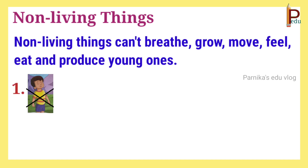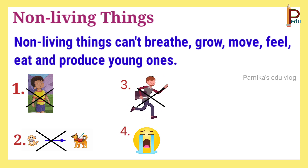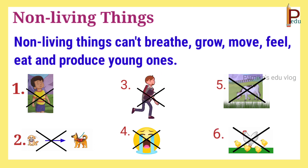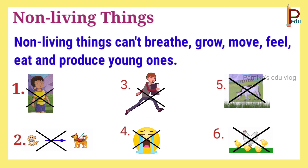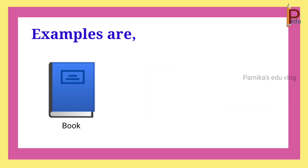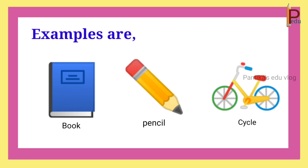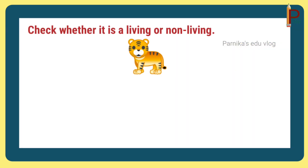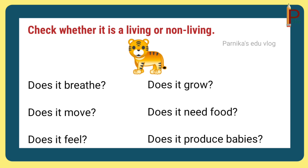Non-living things cannot breathe, cannot grow, cannot move, cannot feel, cannot eat, and cannot produce young ones. Examples are book, pencil, and cycle. Now let's do an exercise — check whether it is a living or non-living thing. Tiger: does it breathe? Yes.